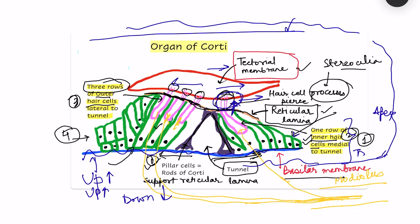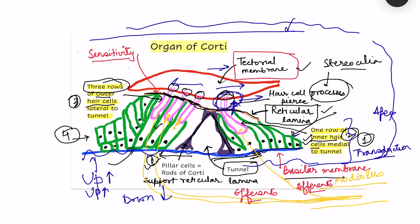What is the use of the outer hair cells? The outer hair cells are responsible for changing the sensitivity of the inner hair cells' response. These outer hair cells are innervated by efferents from the central nervous system. The neuron from the inner hair cell is the afferent, carrying information to the CNS, while the CNS sends information back to the outer hair cells via efferents.